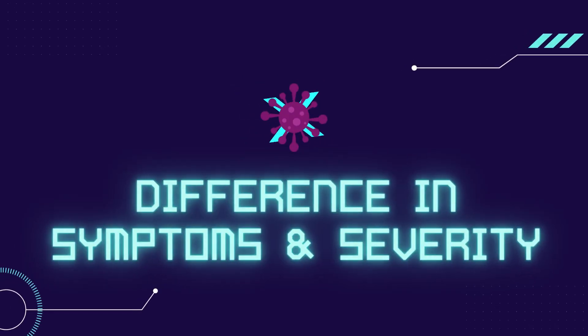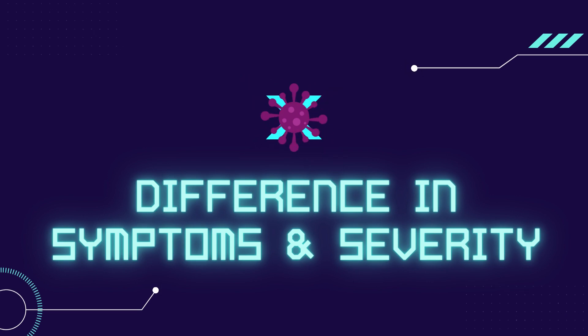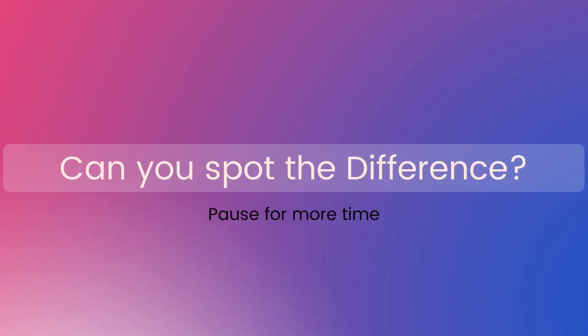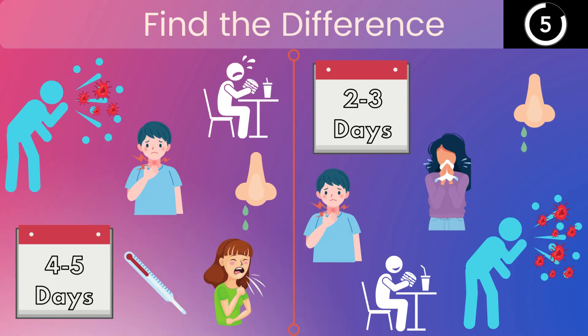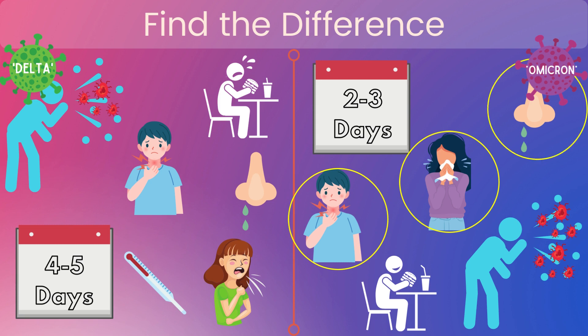For the next portion of this video, we will discuss the differences in symptoms and severity of infection between the Omicron and the Delta variant. In terms of specific symptoms, mild cold-like expressions including sore throat, sneezing, and runny nose are increasingly common in both Omicron and Delta.